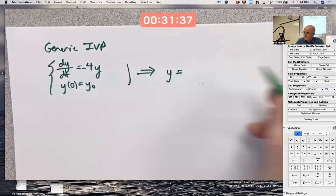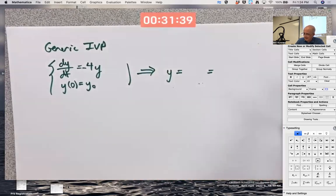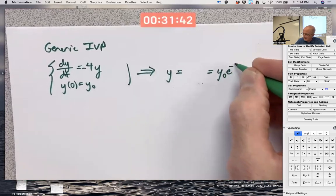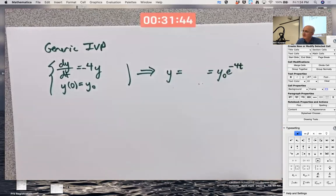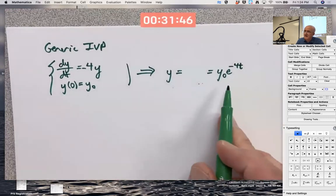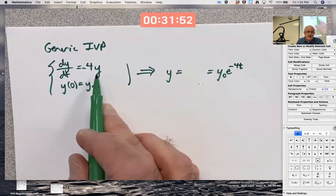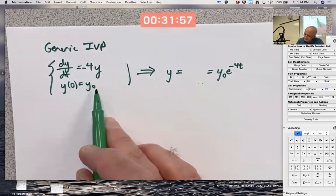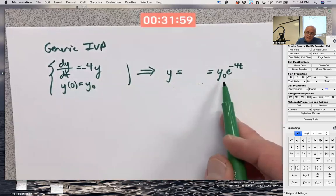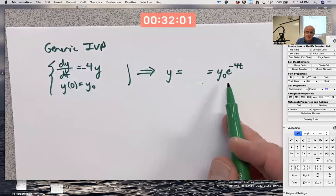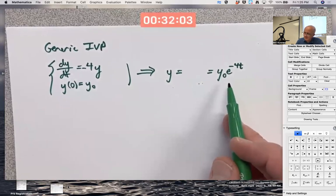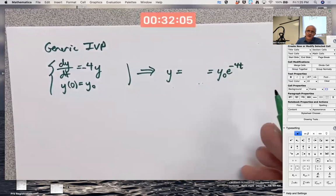y equals y sub 0 e to the negative 4t. c e to the negative 4t, where c is arbitrary would be a general solution of this and represent infinitely many functions. But if I think of y_0 is fixed, then c equals y_0, and I'm thinking of this as one particular function. And then I give this function a name. I call it phi sub y_0 of t.